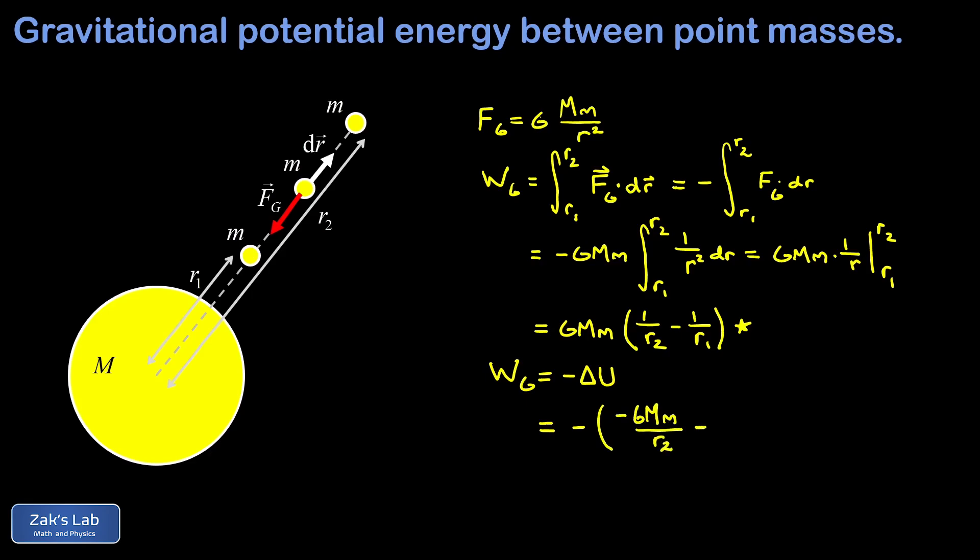I'm gonna leave this minus in between rather than simplifying. So minus negative G big M little m over R1. And I've managed to express this as a negative of a final state minus initial state. So a negative of a change in potential energy function. That implicitly tells us that what we're looking at in this first term is the potential energy at the position R2, and what we're looking at in the second term is the potential energy at the position R1.